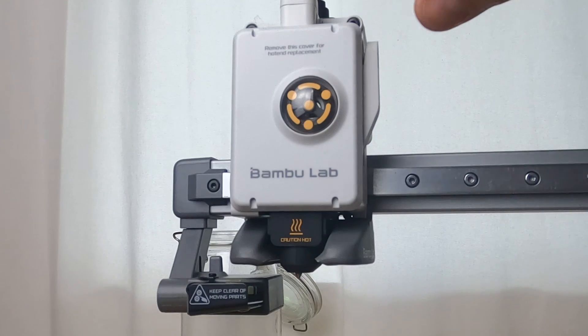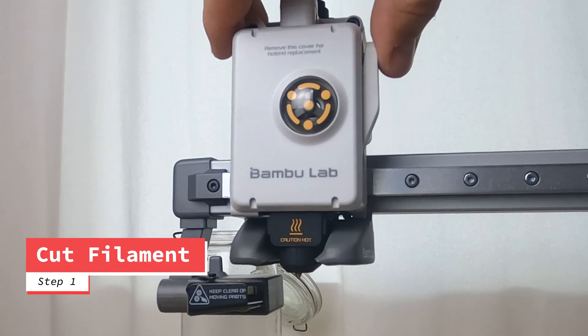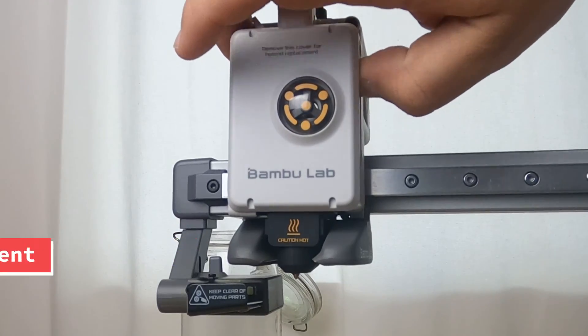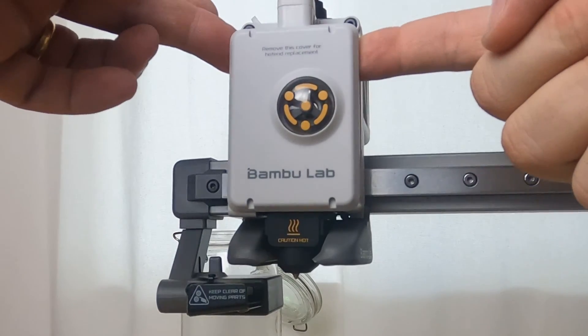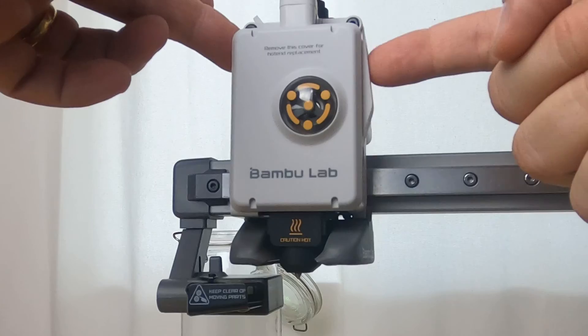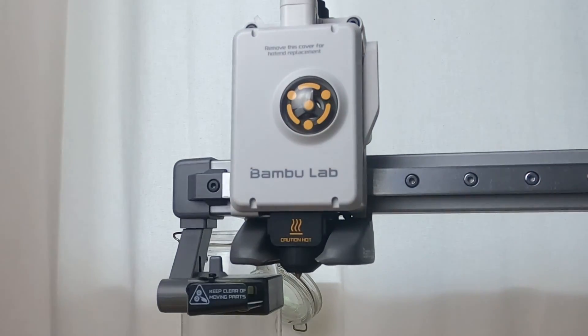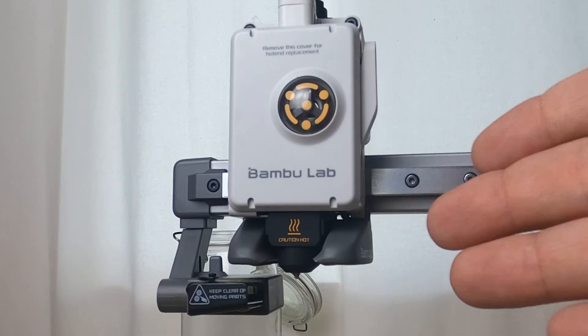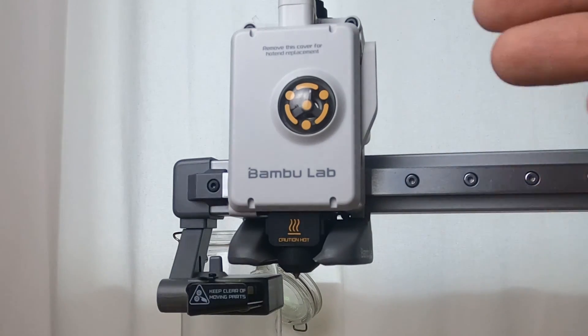First thing you're going to want to do is make sure that whatever filament is still in the nozzle has been cut. So you're going to go ahead and move the slicer and cut the filament in case there is any there. Once you feel no resistance, it means that the filament has been cut and you can go ahead and start removing the face plate.